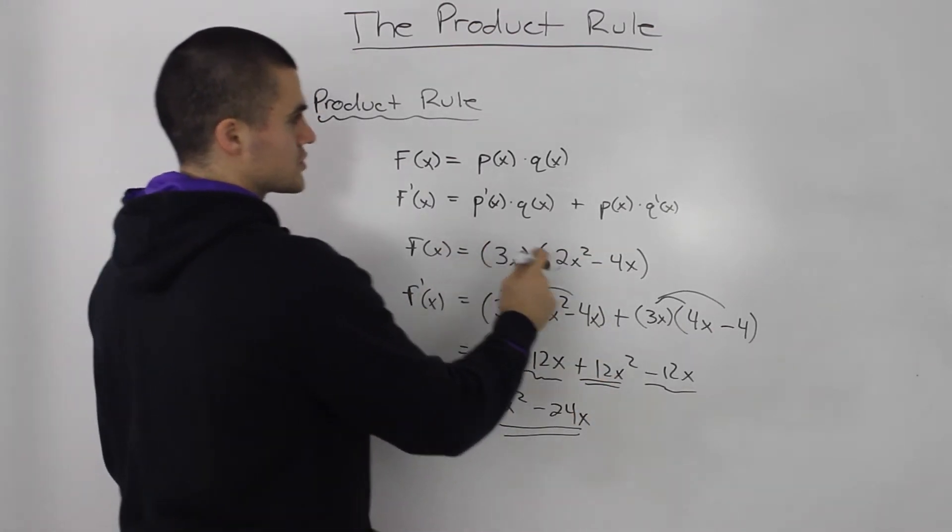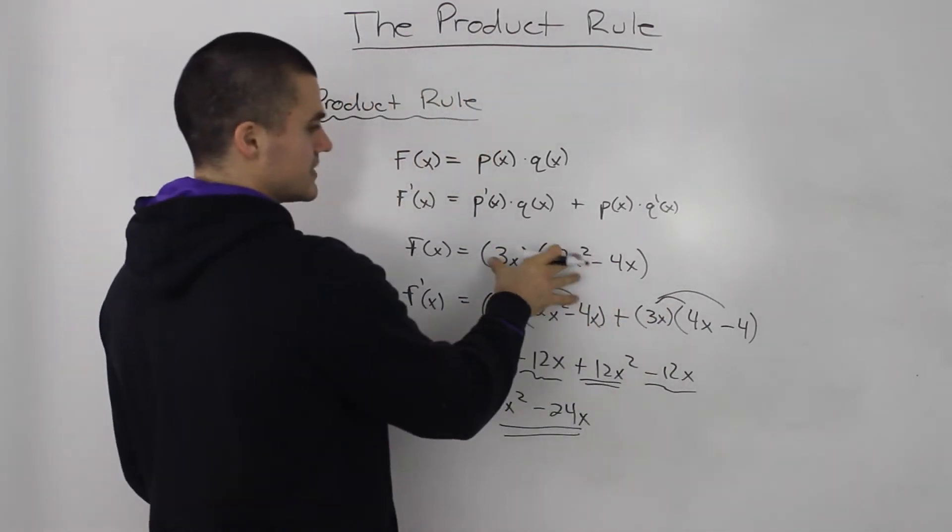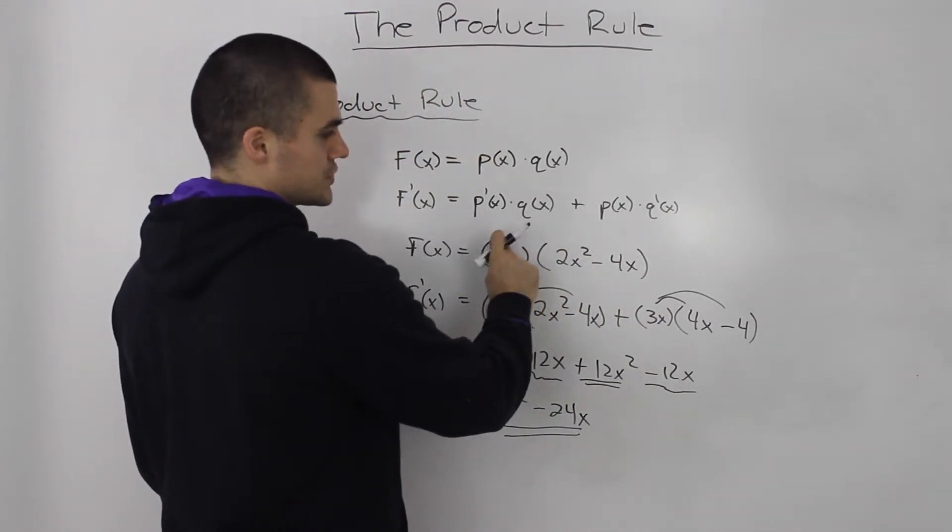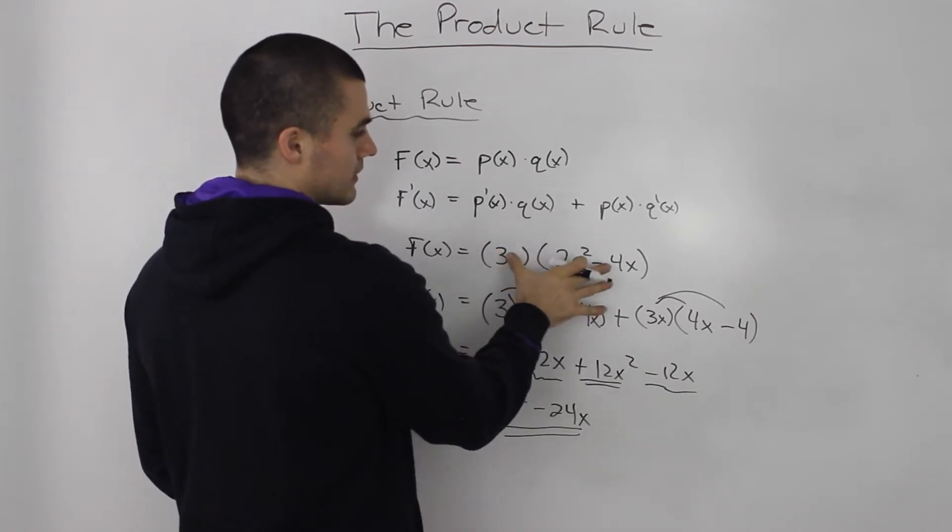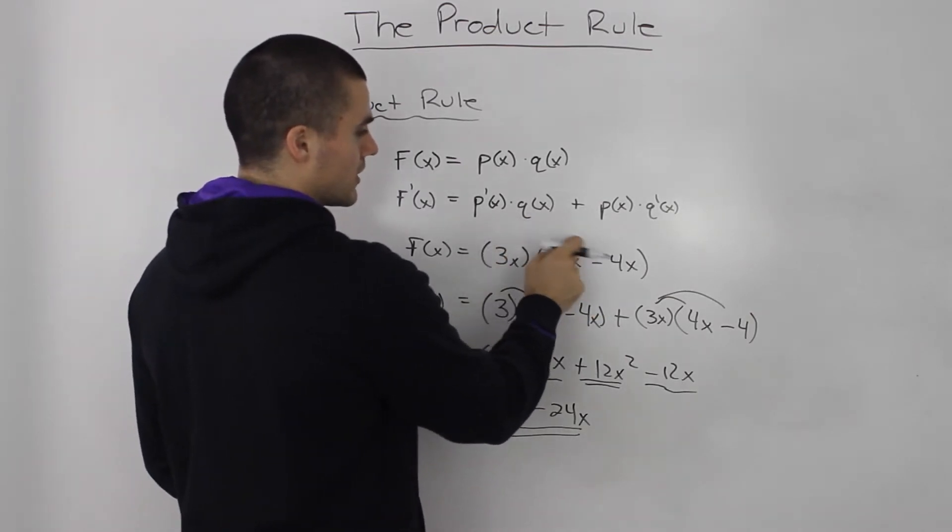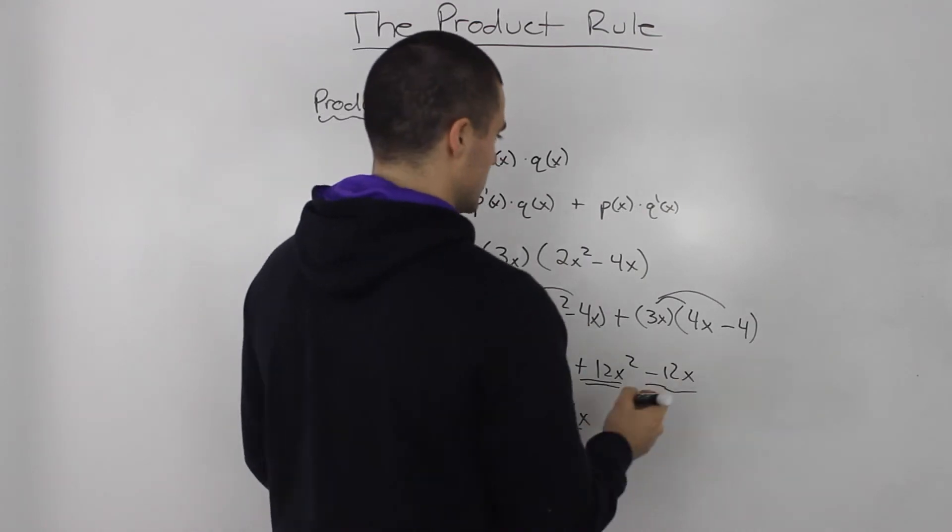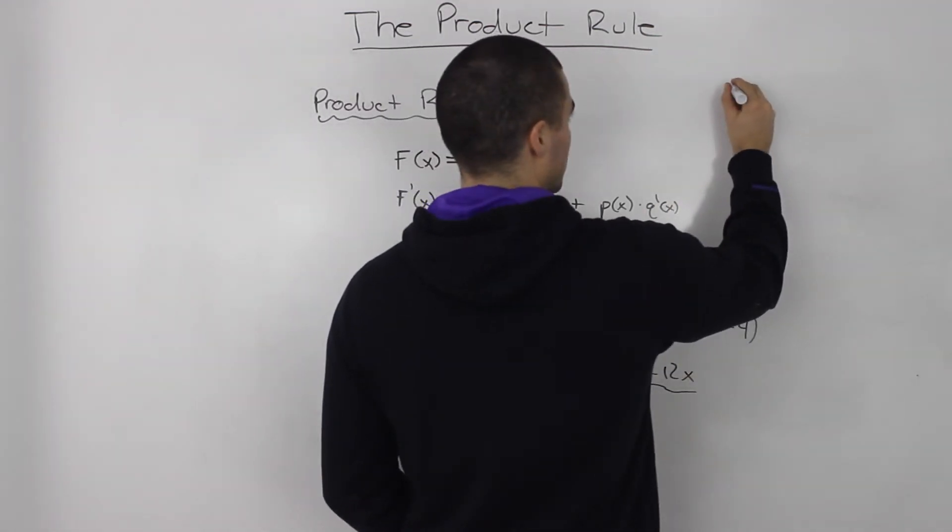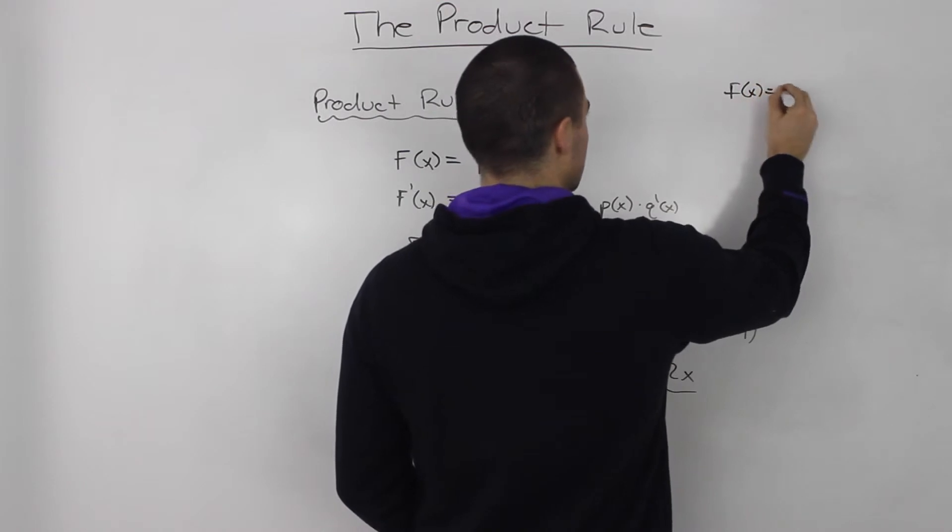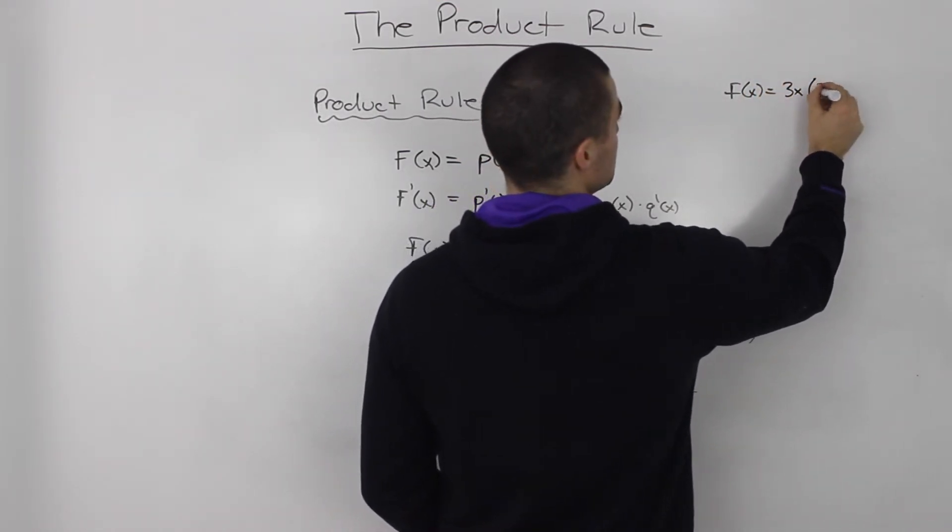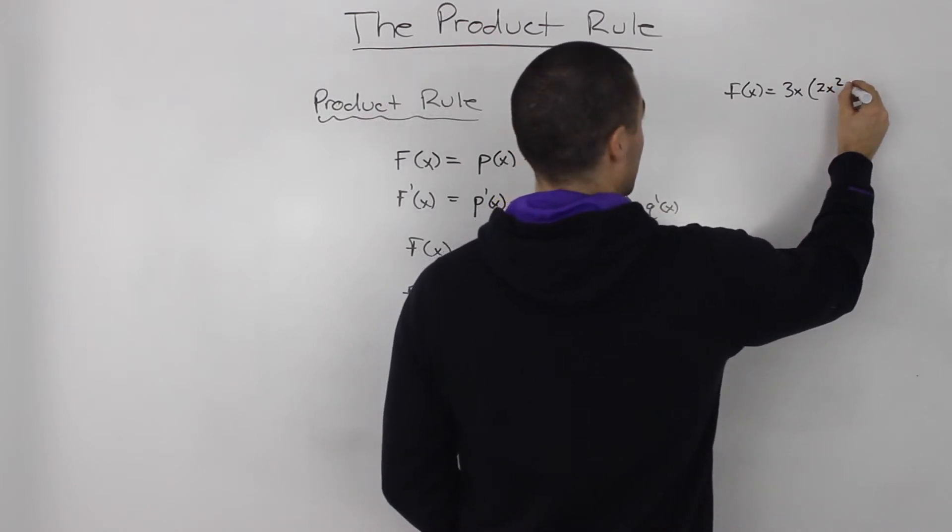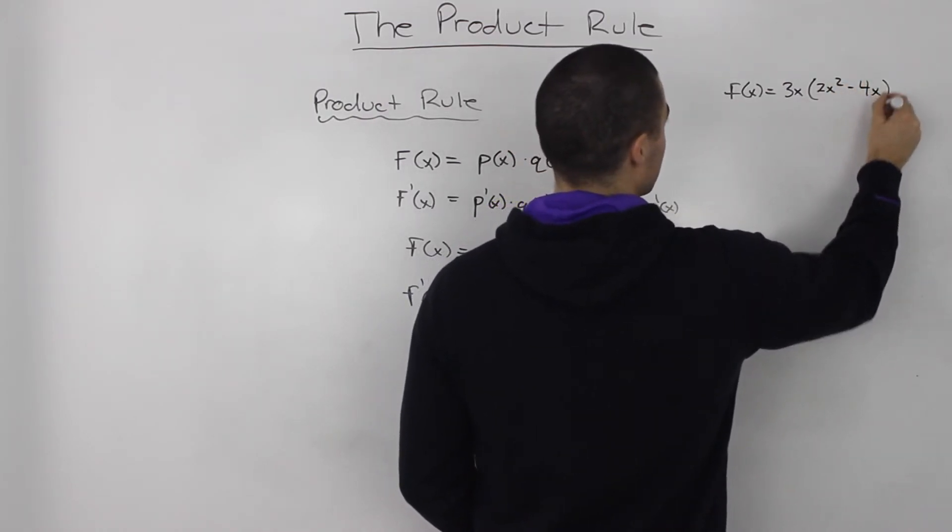Now, you could have also, in this case because it's easier, you could have just distributed or expanded these brackets. So, distributed the 3x into the second bracket. If we did it like that, f of x equals 3x and then we got 2x squared minus 4x.